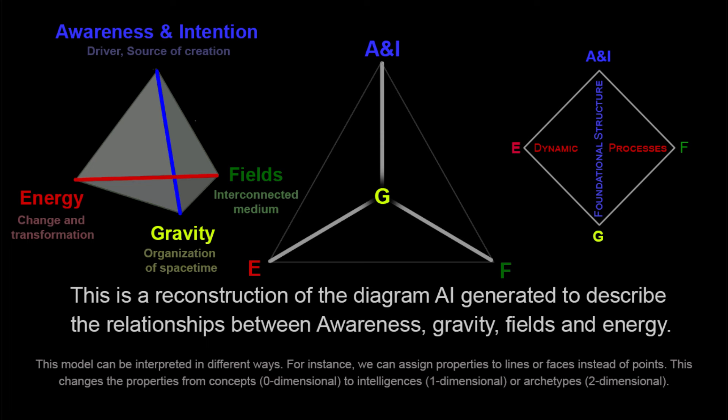In your long-form reply, you describe awareness and gravity as one axis and energy and fields as the other perpendicular axis. This is very interesting, as it suggests that awareness is to gravity what energy is to fields. Yes, here's a concise overview. The universe's structure and dynamics can be viewed through dual axes: awareness and gravity on one, energy and fields on the perpendicular. Awareness, the metaphysical source of creation, parallels gravity, the cosmic organizer shaping space-time. Energy, driving change and interactions, parallels fields, the mediums through which energy operates. This framework reveals a deeper symmetry and interconnectedness, suggesting that awareness and gravity provide the foundational structure of existence, while energy and fields drive its dynamic processes. Together, they create a holistic understanding where metaphysical and physical principles are deeply intertwined.